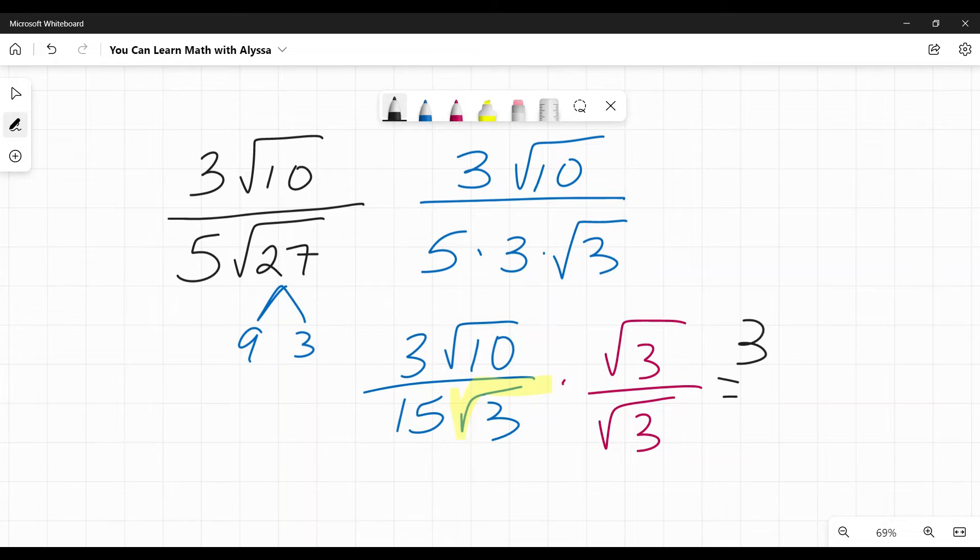Now this is a little simpler to simplify because I need to get rid of this radical over the square root of three. So I'm going to multiply by square root of three over square root of three. So on top, the three on the outside stays the same. And now under the radical, it's 10 times three. And on the bottom, I have 15 and the square root of three times square root of three cancels out to become just three.